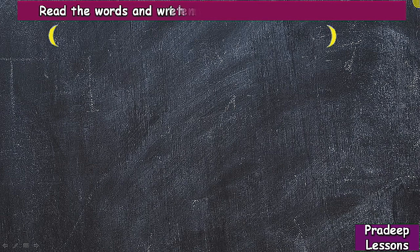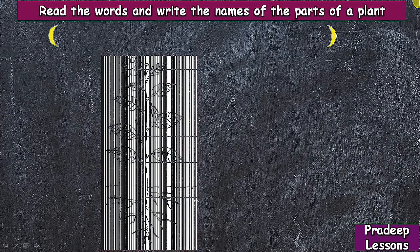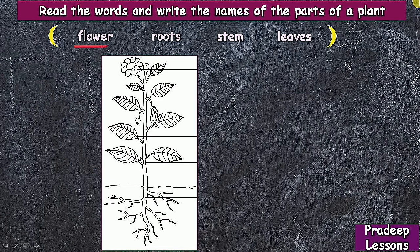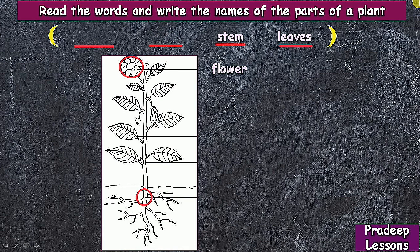Read the words and write the names of the parts of a plant: flower, roots, stem, leaves. In this picture, the first one is a flower, next is a root, then a stem, and the last one is leaves.